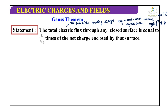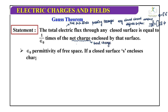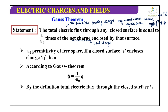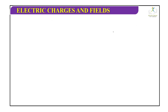So phi is equal to 1 by epsilon naught times the net charge enclosed. Net charge enclosed means the total charge. Epsilon naught is the permittivity of free space. If a closed surface S encloses the charge Q, then according to Gauss theorem, phi equals 1 by epsilon naught times Q enclosed. By definition, total electric flux through a closed surface S is given by phi equals closed integration of vector E dot vector dS.